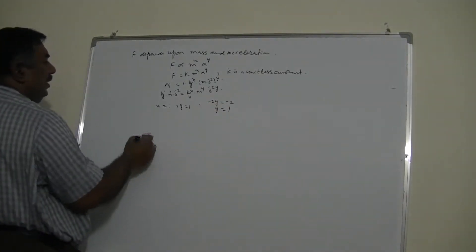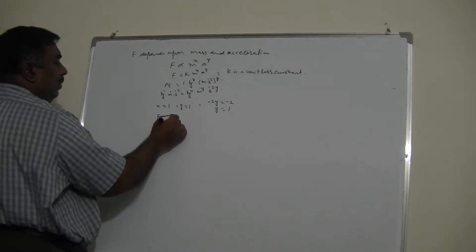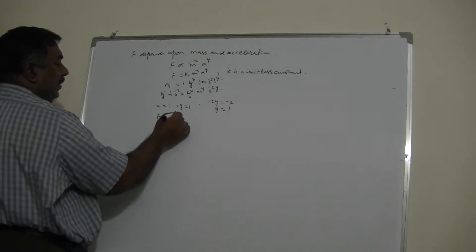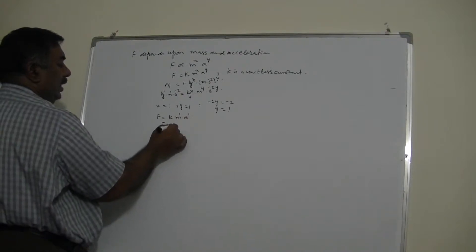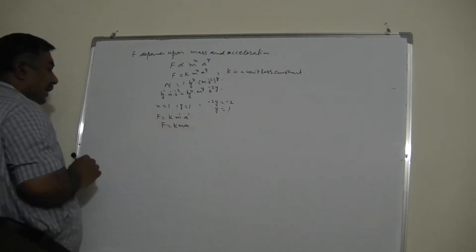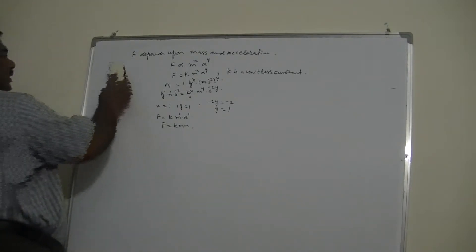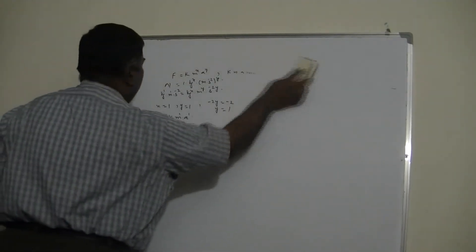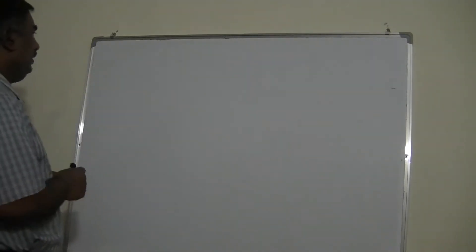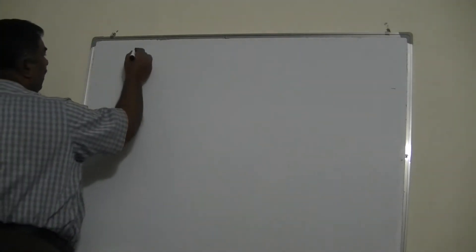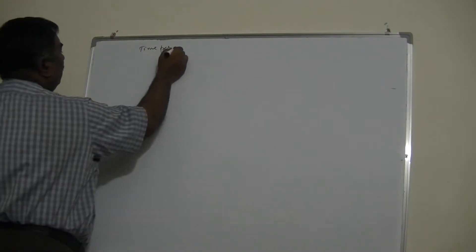So I can write the formula for force: F = k · m^x · a^y, with x = 1 and y = 1, giving F = k·m·a. This is the formula. Similarly, I can derive the formula for the time period of a simple pendulum.